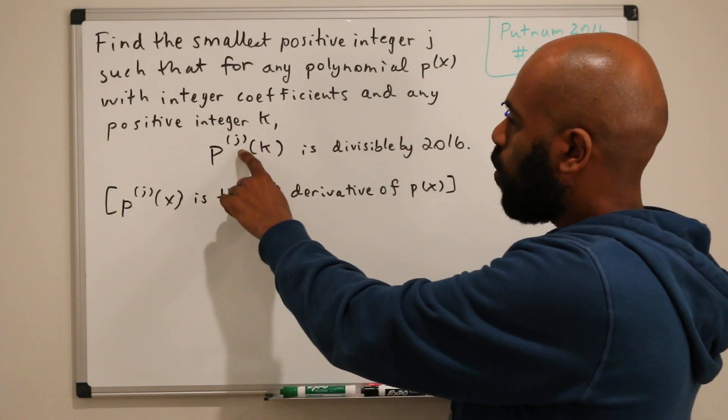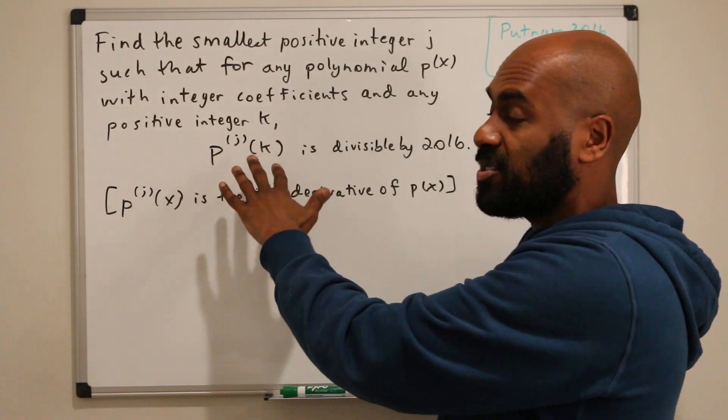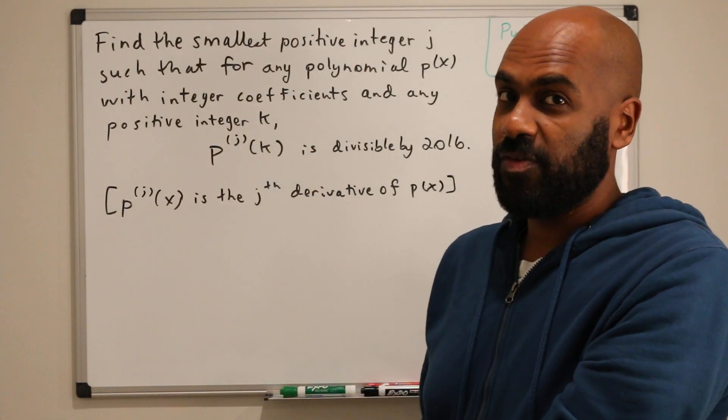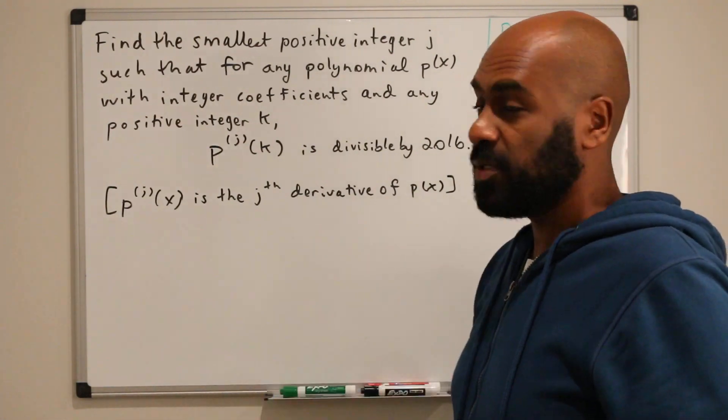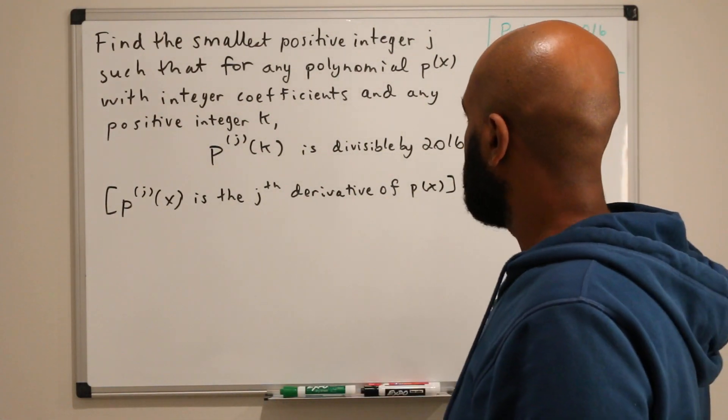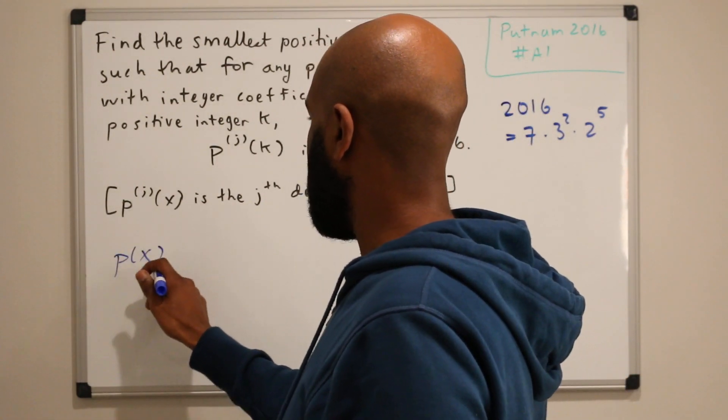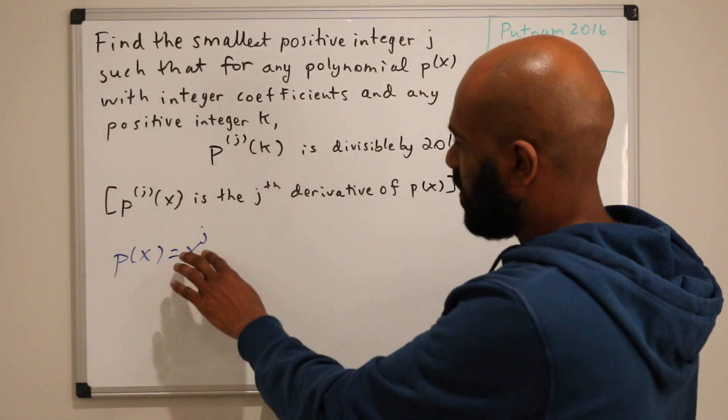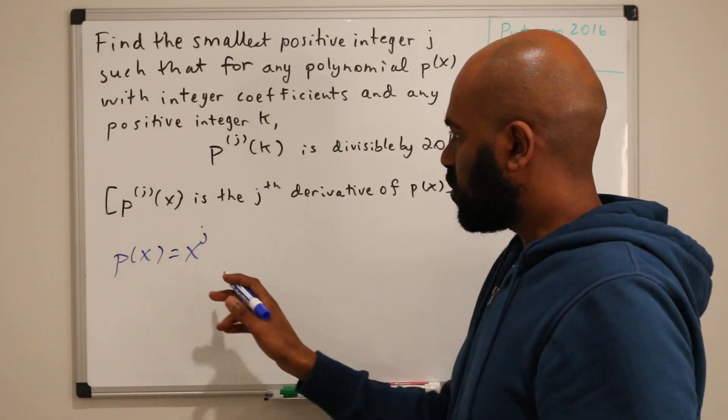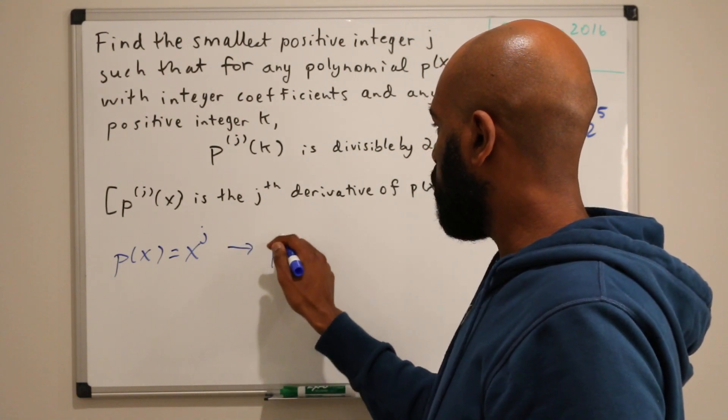Like if j were 4, we could use a polynomial like x to the 4 and we know that the derivative is not even going to be a polynomial with variables in it, it's just going to be a number. So if we pick p(x) to be x to the j, let's see what happens. That way the jth derivative is going to leave us with a constant. So the jth derivative of this thing is j factorial.